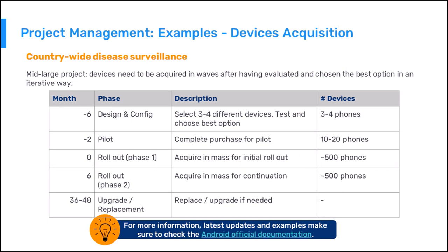In the second scenario, many more devices are needed, and an example strategy could be: acquiring three or four devices for the design and configuration phase, ideally with different specifications within a given price range to choose the best option; acquiring 10 to 20 devices based on the pilot plan; then mass acquiring around 500 devices for the rollout, where a large volume may enable good deals or promotions; acquiring the remaining 500 devices; and finally proceeding with replacement or upgrades when needed. Please note that these are general guidelines and more information is provided in the official documentation.